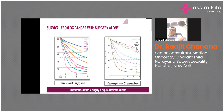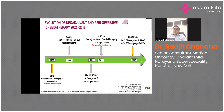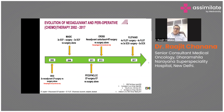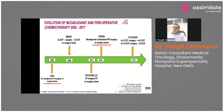The evolution of neoadjuvant treatment began with the MAGIC trial in 2006, which showed that a three-drug regimen given before and after surgery resulted in a significant survival benefit of around 15 to 20 percent. Then the CROSS trial showed that combining neoadjuvant radiation and chemotherapy before surgery in distal esophagus and GE junction tumors was a landmark, practice-changing result.